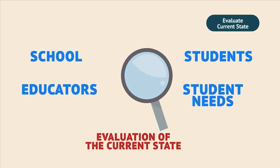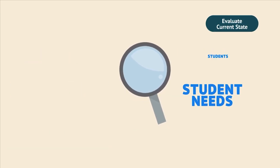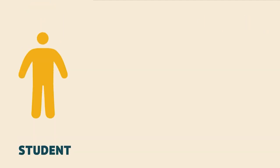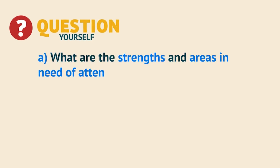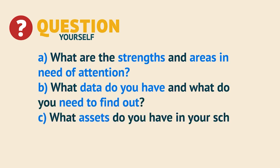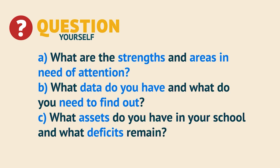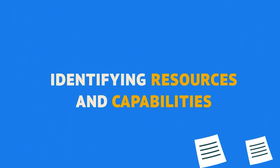When we introduced the NEAR model in Mini PE-1, we started by asking for a detailed assessment of student, school, and community assets. What are the strengths and areas in need of attention? What data do you have, and what do you need to find out? What assets do you have in your school, and what deficits remain? By understanding the assets of your education system, you're identifying resources and capabilities that can be incorporated into an improvement plan.